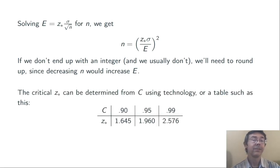Remember throughout this that the z* is coming from the confidence level C that we specify at the beginning of the process. That z* can be computed from C using technology or a table like this one.